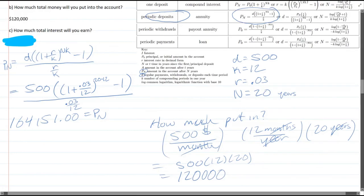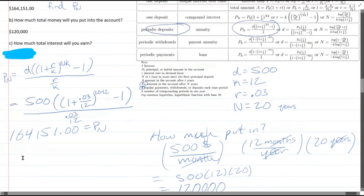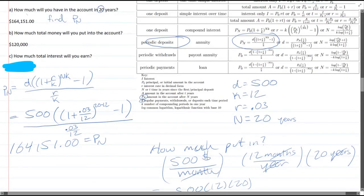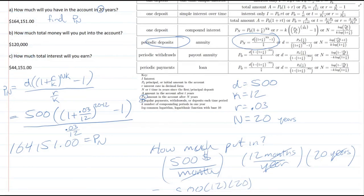All right. So that'll be the amount you put into the account. Now, the last one, how much total interest will you earn? Well, that is the difference between what you put in and what the value is at the end. You subtract those two and that'll give you that last part right there. It's the difference between what you put in and what the interest earned for you.